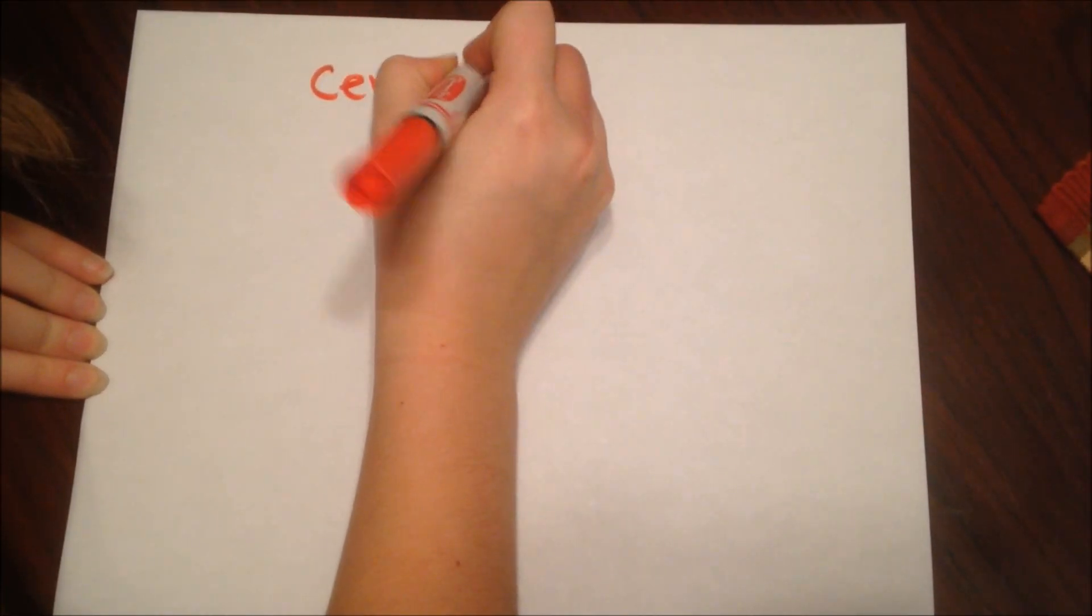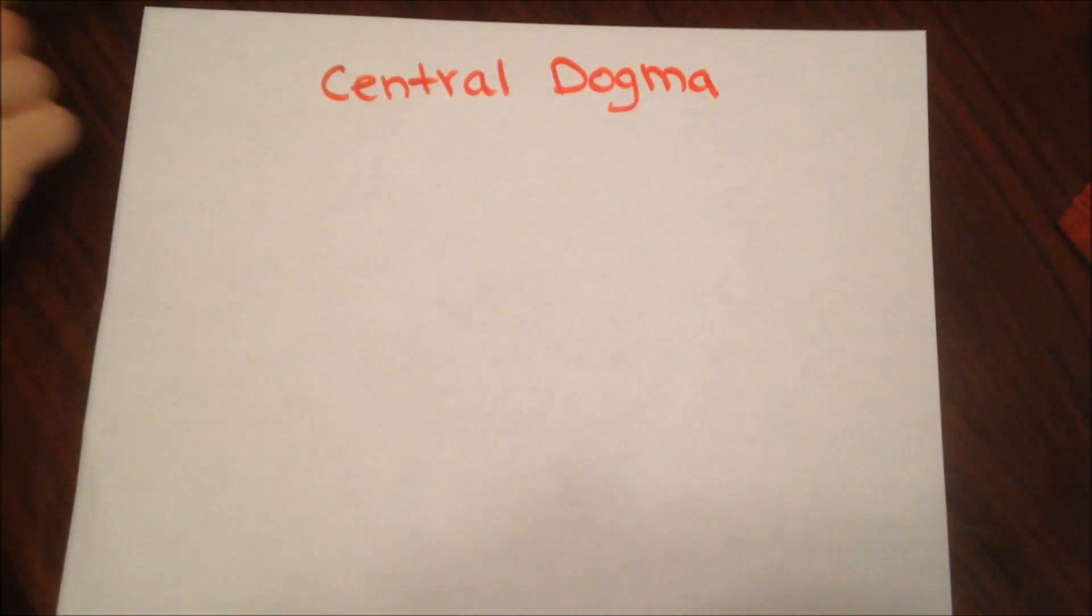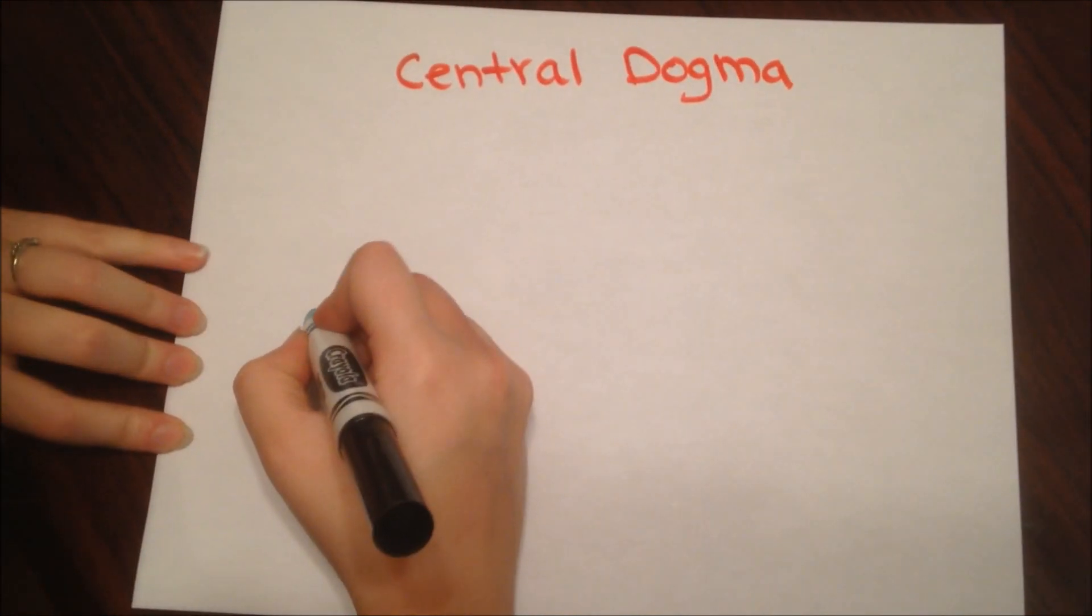Coined by Francis Crick, the central dogma of molecular biology states that biological information flows in only one direction, from DNA to RNA to proteins.